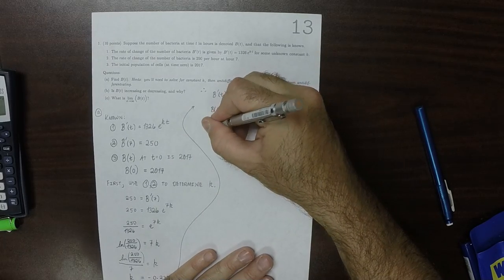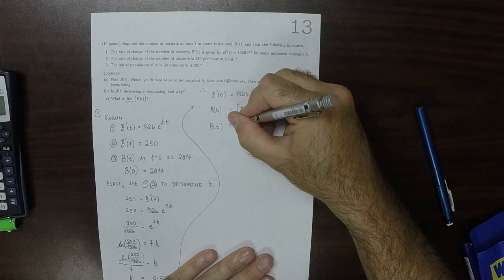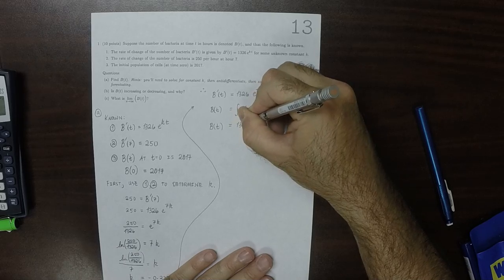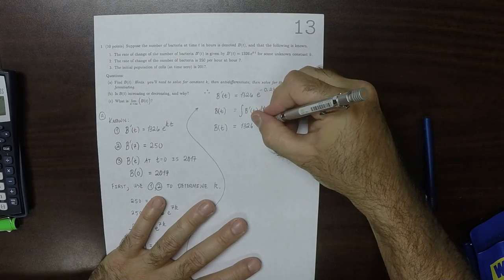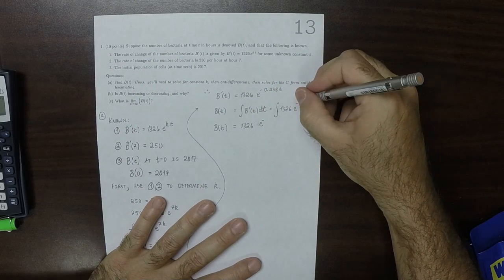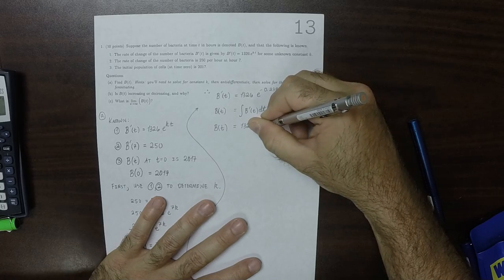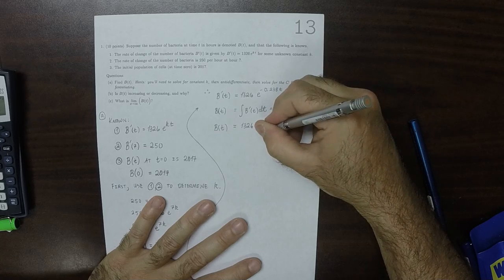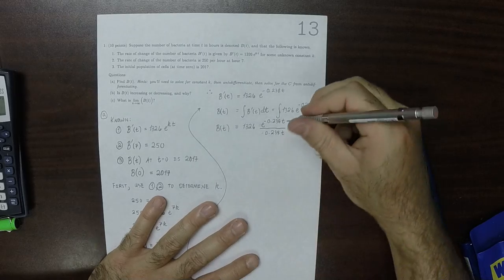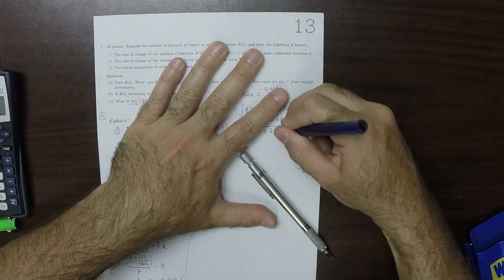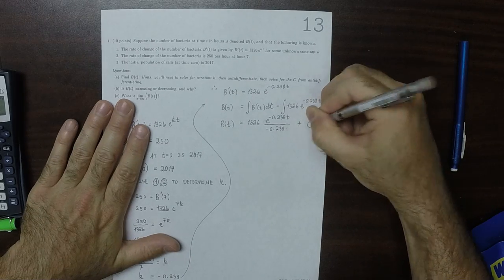Well, that is going to be 1,326 and then exponential of negative 0.238 t, and then all of that divided by negative 0.238. Not t, just divide by that constant. And then plus the unknown c.